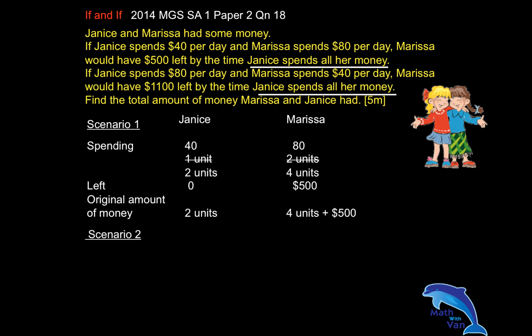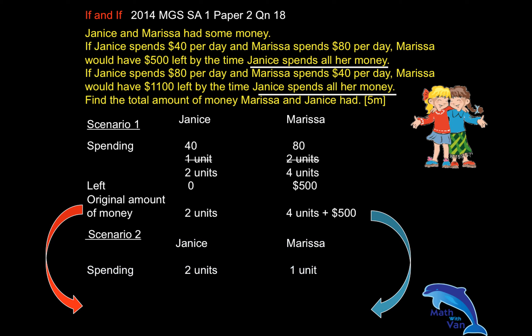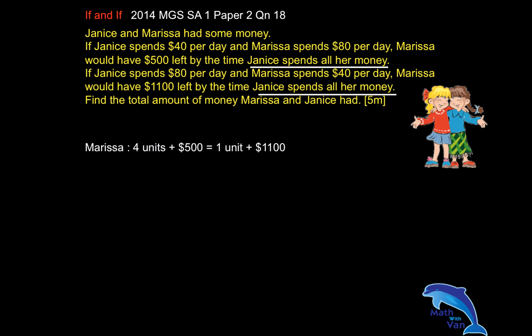Since Jenny's amount of money is two units and she spent all her money in both scenarios, Jenny also spent two units. Looking at Scenario 2, Jenny spent $80 per day and Marissa spent $40 per day — so given the same number of days, Marissa spent half. Half of two units is one unit. Add back what is left: Jenny is two units, and Marissa is one unit plus $1,100. We've now reduced to the same expression. Because four units plus $500 equals one unit plus $1,100 — this is the original amount of money Marissa had, regardless of the scenario.